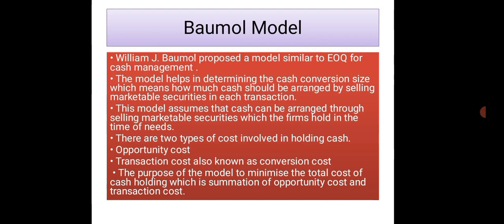In cash management we have models. The first cash management model was developed by William J. Baumol. Baumol proposed a model similar to EOQ, that is Economic Order Quantity, for cash management. The model helps in determining the cash conversion size, which means how much cash should be arranged by selling marketable securities in each transaction. This model assumes that cash can be arranged through selling marketable securities which firms hold in time of need.